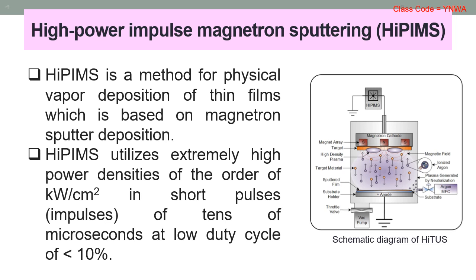High power impulse magnetron sputtering, or HiPIMS: HiPIMS is a method for physical vapor deposition of thin films which is based on magnetron sputter deposition. HiPIMS utilizes extremely high power densities on the order of kW per centimeter squared in short pulses or impulses of tens of microseconds, at a low duty cycle of less than 10 percent.